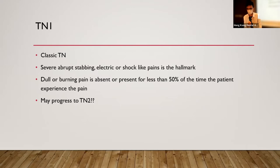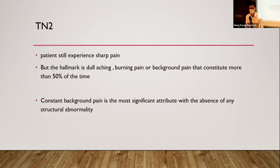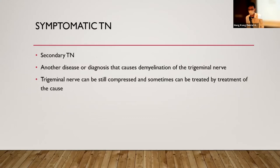Some patients with type 1 trigeminal neuralgia can progress to type 2. In type 2, patients still experience the shooting, sharp, lightning pain, but the typical dull or burning pain constitutes more than 50% of the time, with a constant background of pain as the sole significant attribute in the absence of any structural abnormality. Trigeminal neuralgia is by definition only diagnosed when other structural disease has been ruled out.